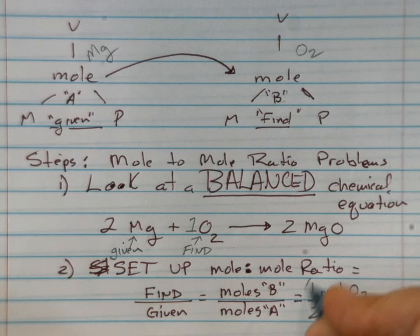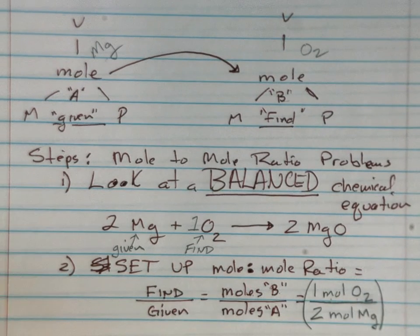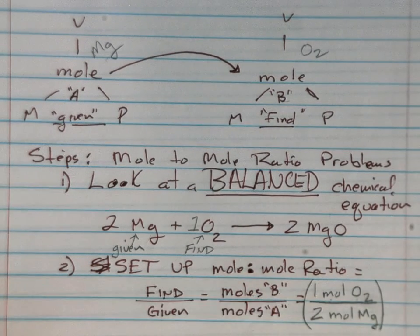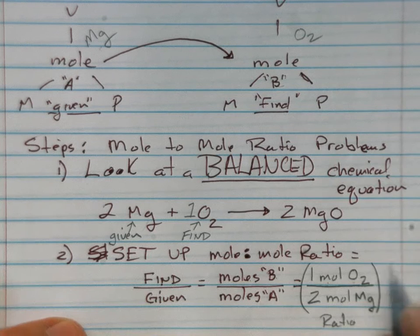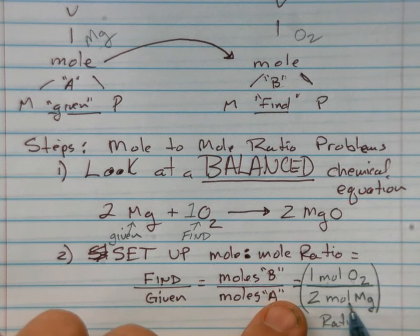This becomes, when we're doing these stoichiometry problems, this will be the middle part. This is what we call the ratio. We're comparing moles in the balanced equation of what we're looking for compared to moles of what we're trying to find.